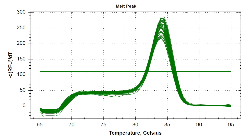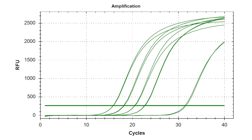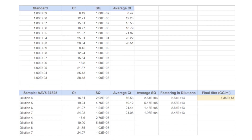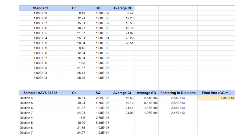Third, take a closer look at your melt curve. Ideally, you will observe one single peak. The presence of a second peak may indicate the presence of primer dimers, which could alter the CT values of your samples. Last, confirm that your sample duplicates are within a 0.5 CT range, and that your amplification plots for the dilution series of each sample look correct. Verify that CT values for your no-template control are higher than any of your standards or sample dilutions. Exclude any unwanted wells from analysis in your software.